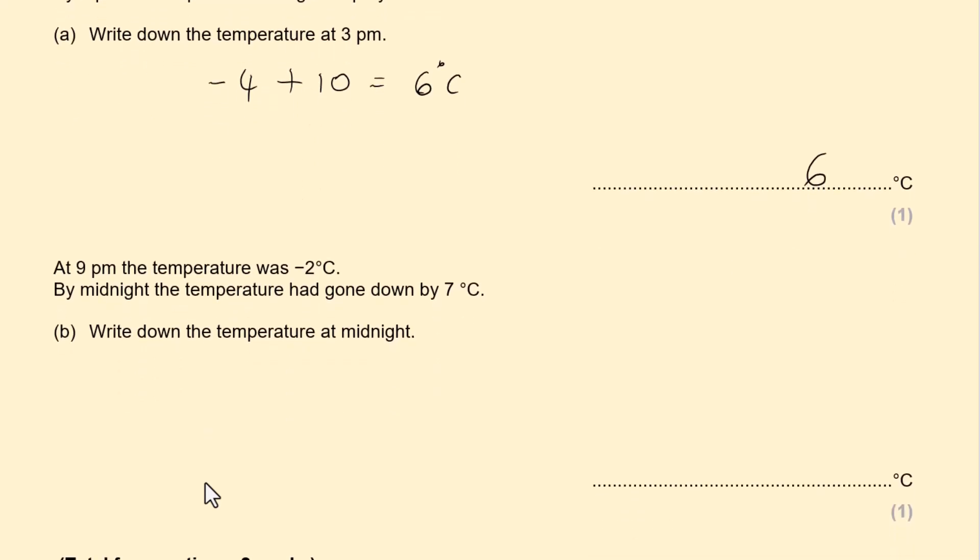At 9pm, the temperature was minus 2. By midnight, the temperature had gone down by 7 degrees, minus 2 minus 7 is minus 9 degrees Celsius. So minus 9. These questions are worth 1 mark each. Altogether, 2 marks.